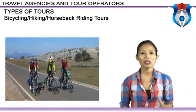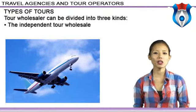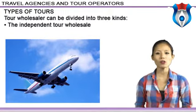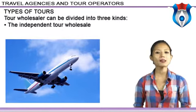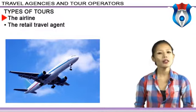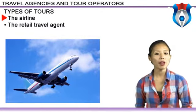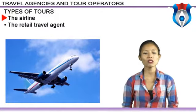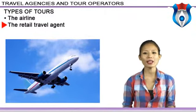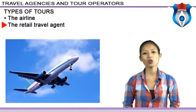Tour wholesalers can be divided into three kinds: the independent tour wholesaler, who combines transportation and ground services into tours or packages and sells them through travel agencies to individual or group travelers; the airline, working in close cooperation with tour wholesalers — some airlines have wholesaling divisions that put together tours, such as British Airways; and the retail travel agent who packages tours for clients, such as Design NZ on Travel.